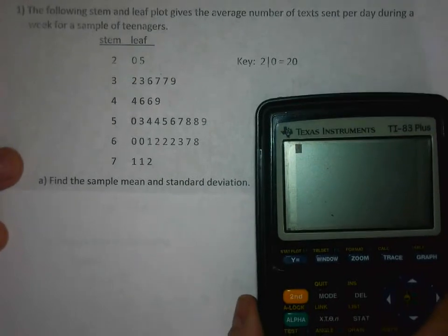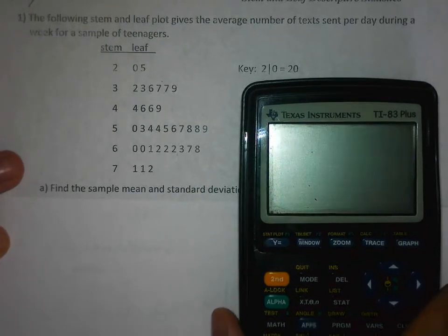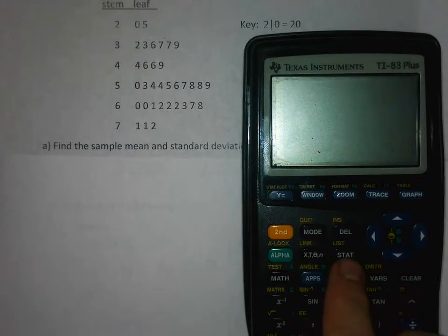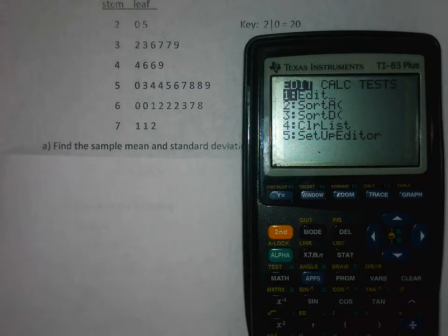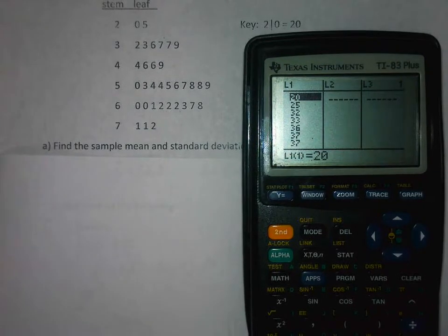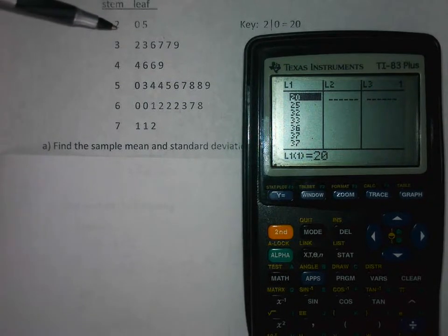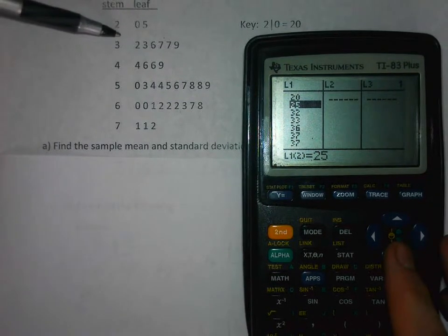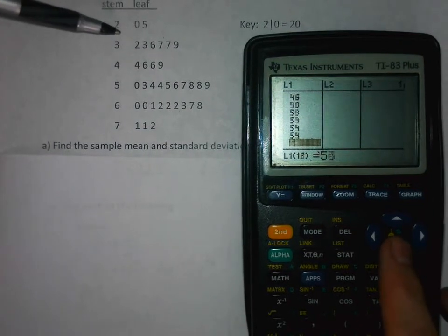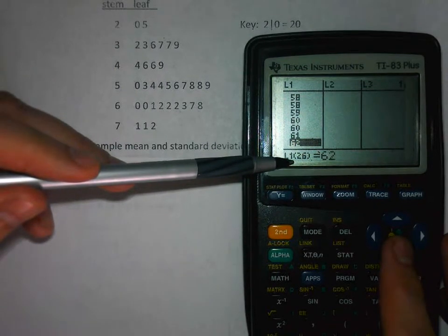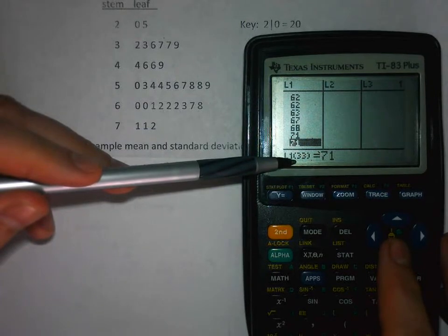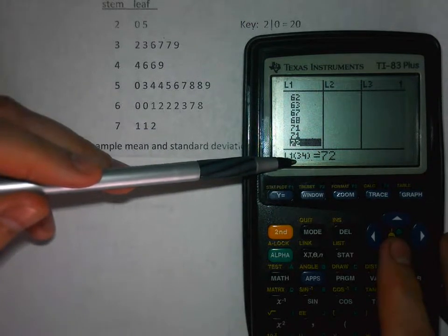Here are the steps for using the calculator to find standard deviation. First press the STAT button and then press ENTER so you edit a list. You'll notice I already have mine entered just to save time, but the first data value was 20, the next one 25, and so on.